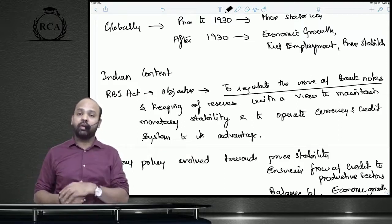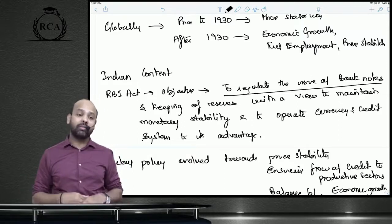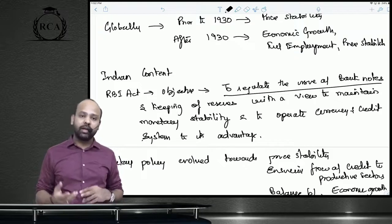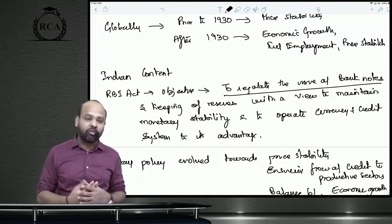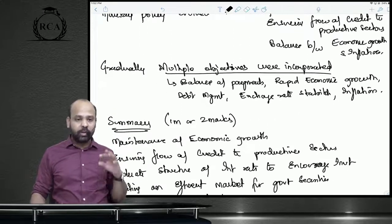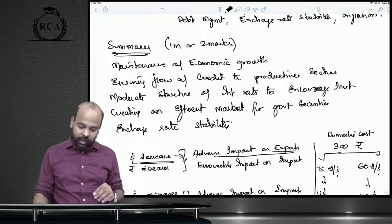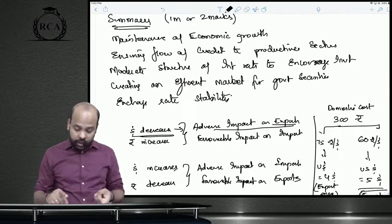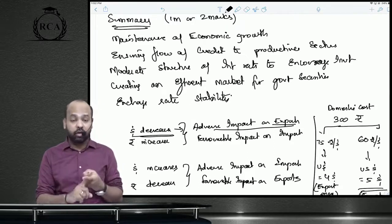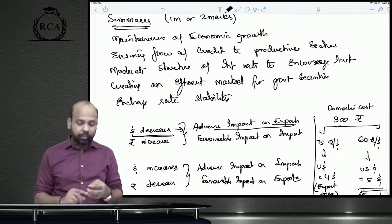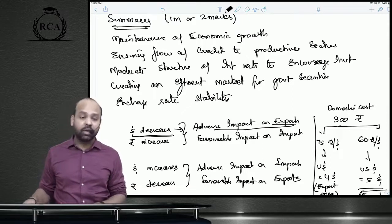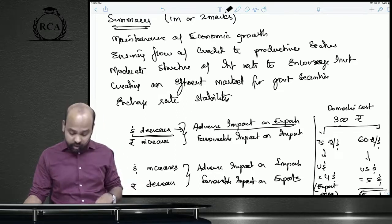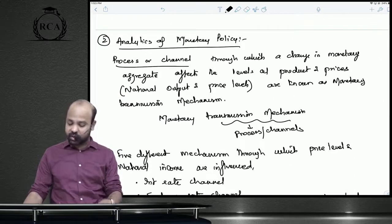Gradually the objective became price stability, though not directly specified initially. Later, multiple objectives were included: debt management, exchange rate stability, balance of payments, and inflation. To summarize, the objectives are: maintenance of economic growth, ensuring adequate credit flow to the productive sector, moderating the structure of interest rates, creating an efficient market for government securities, and exchange rate and price stability — with price stability as the primary objective.